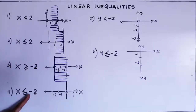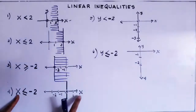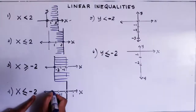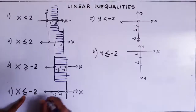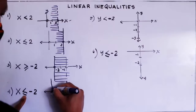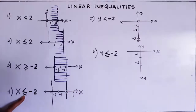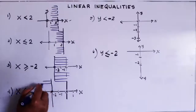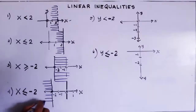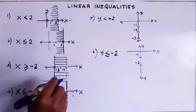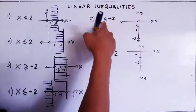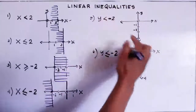Number four. We locate negative two on the x-axis — negative two is here again. This one has an equal sign, therefore it is visible. So we draw the solid vertical line at negative two. But this time x is less than, meaning smaller, so when it's smaller it goes to the left — we shade to the left.